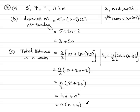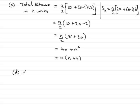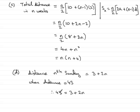In part d we're asked to find the value of n when she ran 43 kilometers on the nth Sunday. From part b, the distance on the nth Sunday was given by three plus two n. When that distance is 43 kilometers, we have 43 equals three plus two n. Subtracting three from both sides gives 40 equals two n, and dividing by two gives n equals 20.